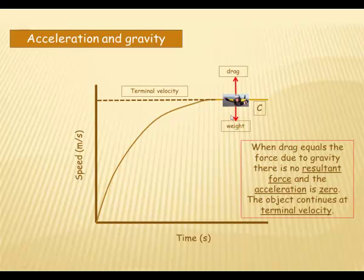You can see now that these two arrows are equal. When drag equals the force of gravity, i.e. the weight, there's no resultant force. And so there is no further acceleration. Acceleration is zero. The object continues at what we call terminal velocity.